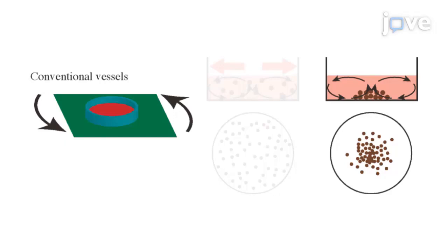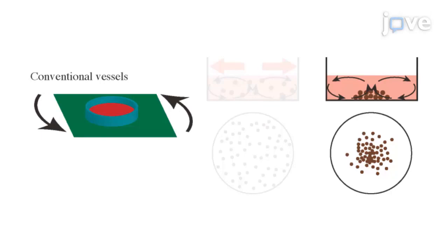This effect is well known as Einstein's tea-leaf paradox. This effect causes excess accumulation of cells in the center-bottom of vessels and inhomogeneous aggregation.